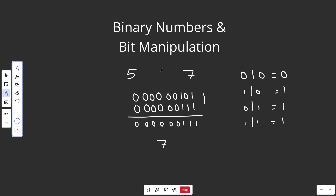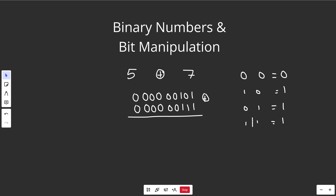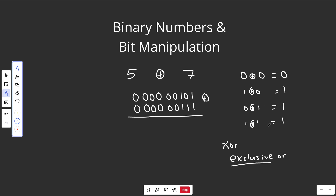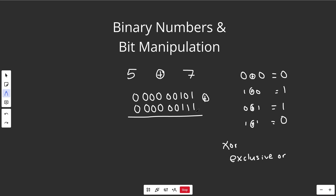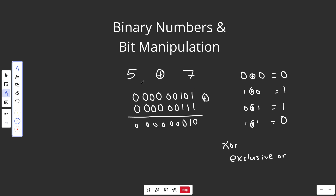Let's change this to XOR, marked by a plus with a circle around it. XOR is very similar to OR, but it's short for exclusive OR — meaning only one of the sides is true. So where both sides are 1, that becomes 0 instead. XOR is very common in LeetCode because it cancels out bits where they're the same and only leaves bits where they differ. So 5 XOR 7 gives just a 1 in the second position, which is 2 to the 1, equal to 2.